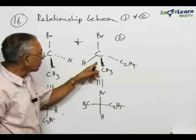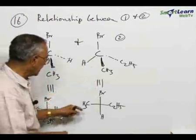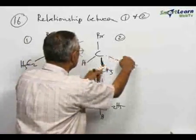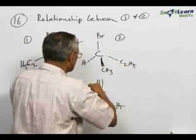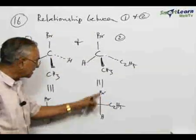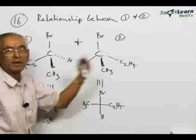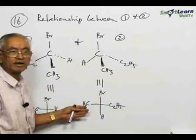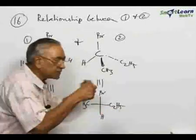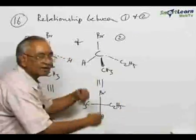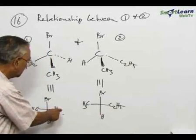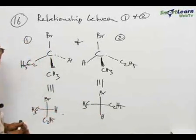Similarly, the equivalent Fischer projection for this: apply the same rule. The two groups CH3 and C2H5, two adjacent groups, you try to pull them to the front. The two groups come as horizontal groups. The convention is vertical groups are behind the plane, horizontal groups in a Fischer projection are in front of the plane. So CH3 and C2H5 are in front of the plane and Br and H are behind the plane. Similarly, in this case, CH3 and H are in front of the plane and Br and C2H5 are behind the plane.